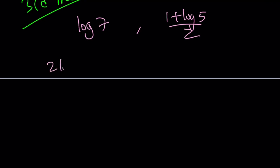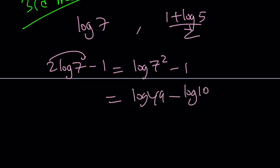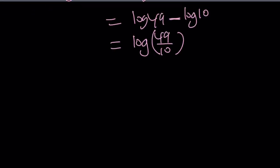So I'm going to start off with something like this. And again, this is not random. If you assume one of these numbers is larger than the other and work backwards, you're going to get the same idea. So 2 log 7 minus 1. This can be written as log 7 squared minus 1, which is log 49 minus 1. But 1 can be written as log 10. And then I can write this using the quotient rule as log 49 over 10.